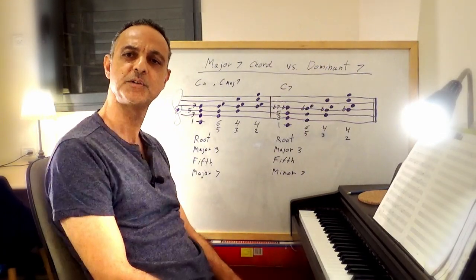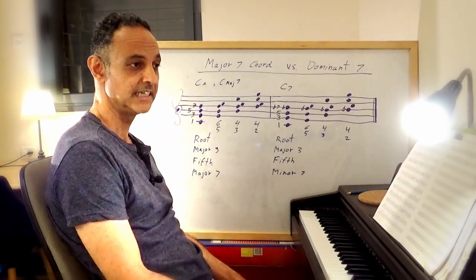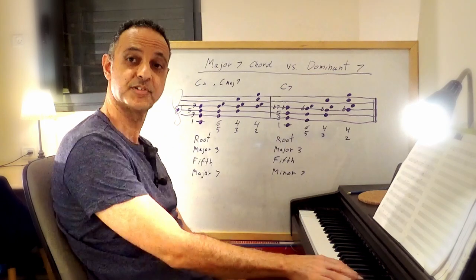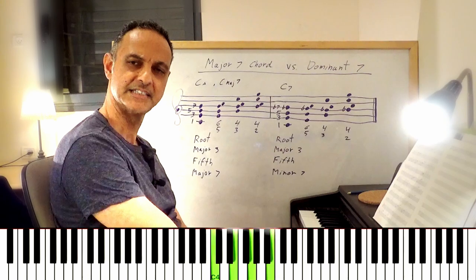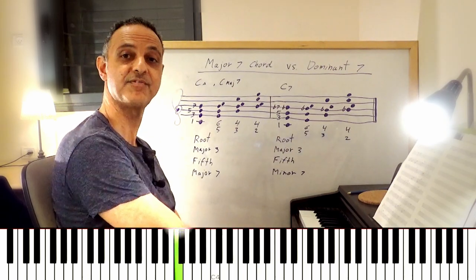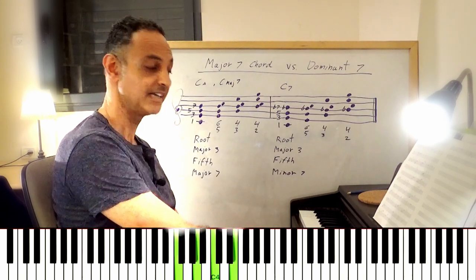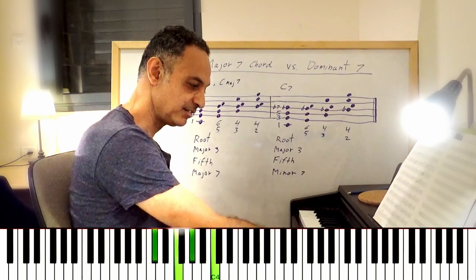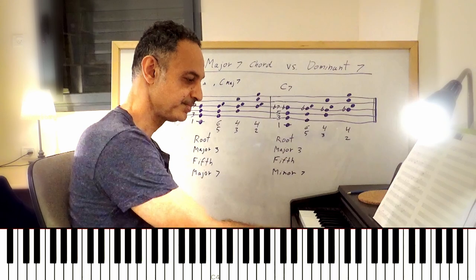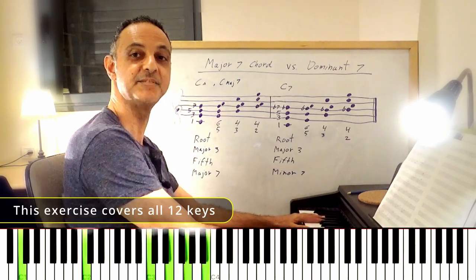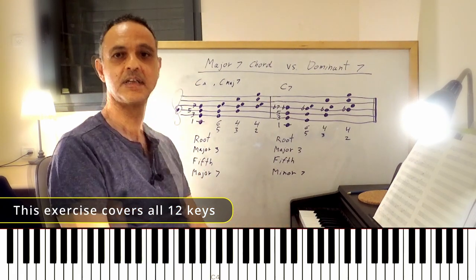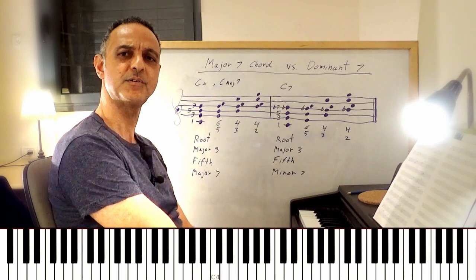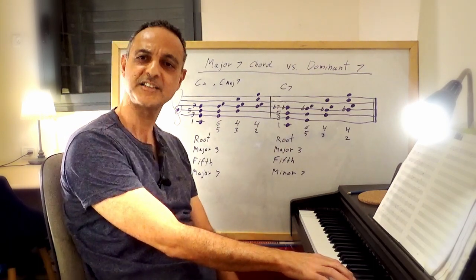Another exercise is to play the major 7 chord through the circle of 5ths, or descending 5ths. Start with C major 7 in root position, then go down a 5th to F major 7, then another 5th down to B flat, then E flat, and so on — until you're back to C major 7. This is a good exercise.